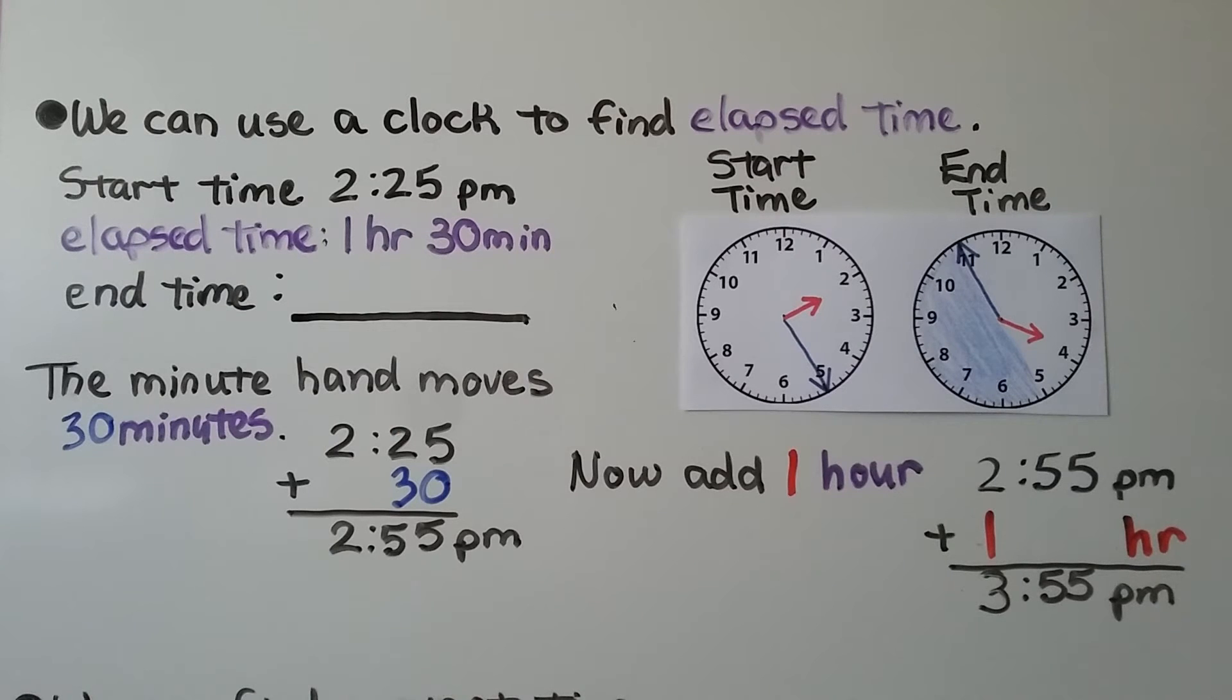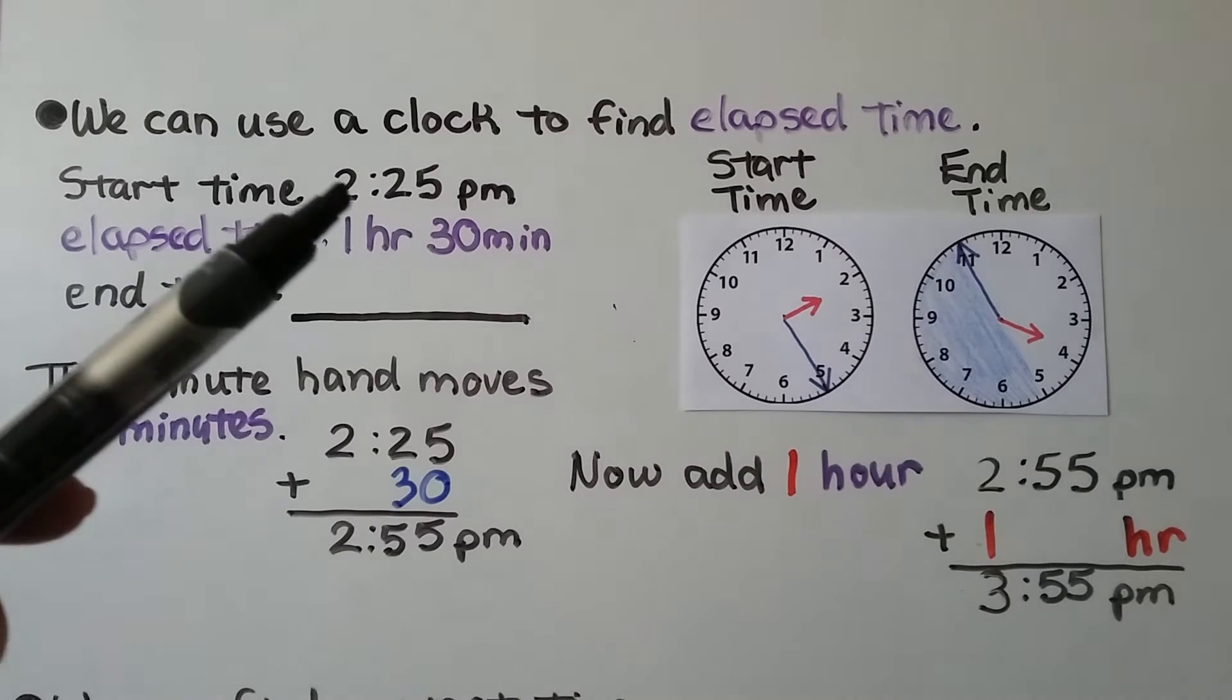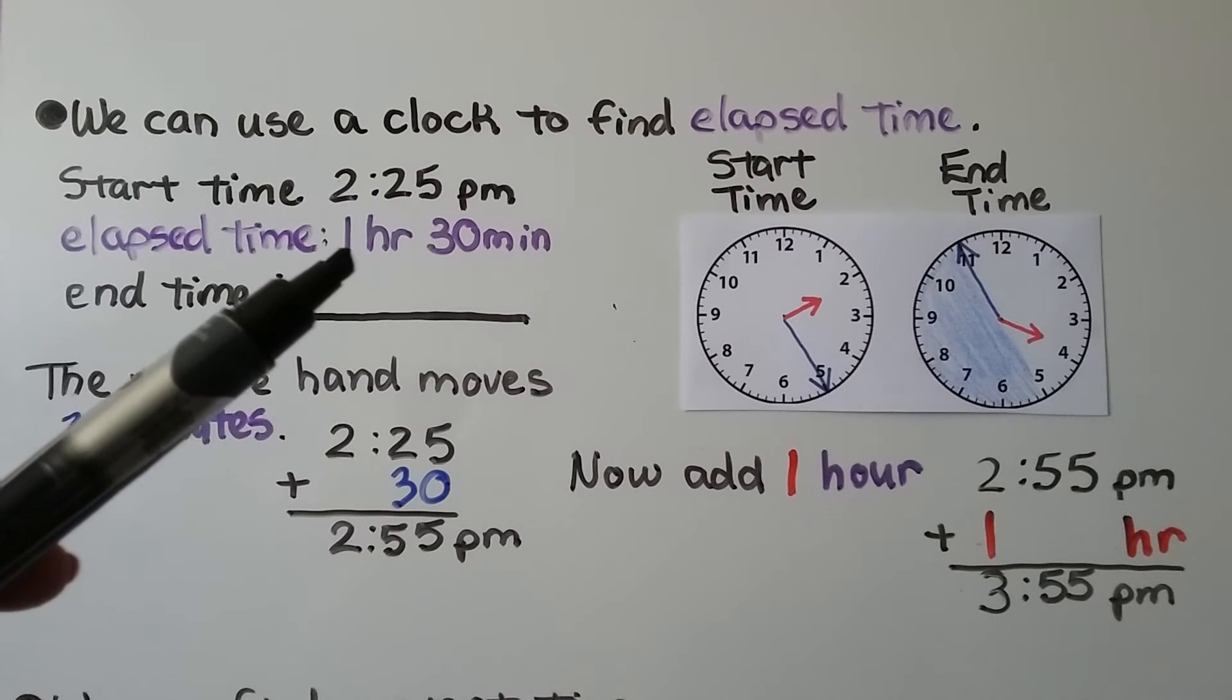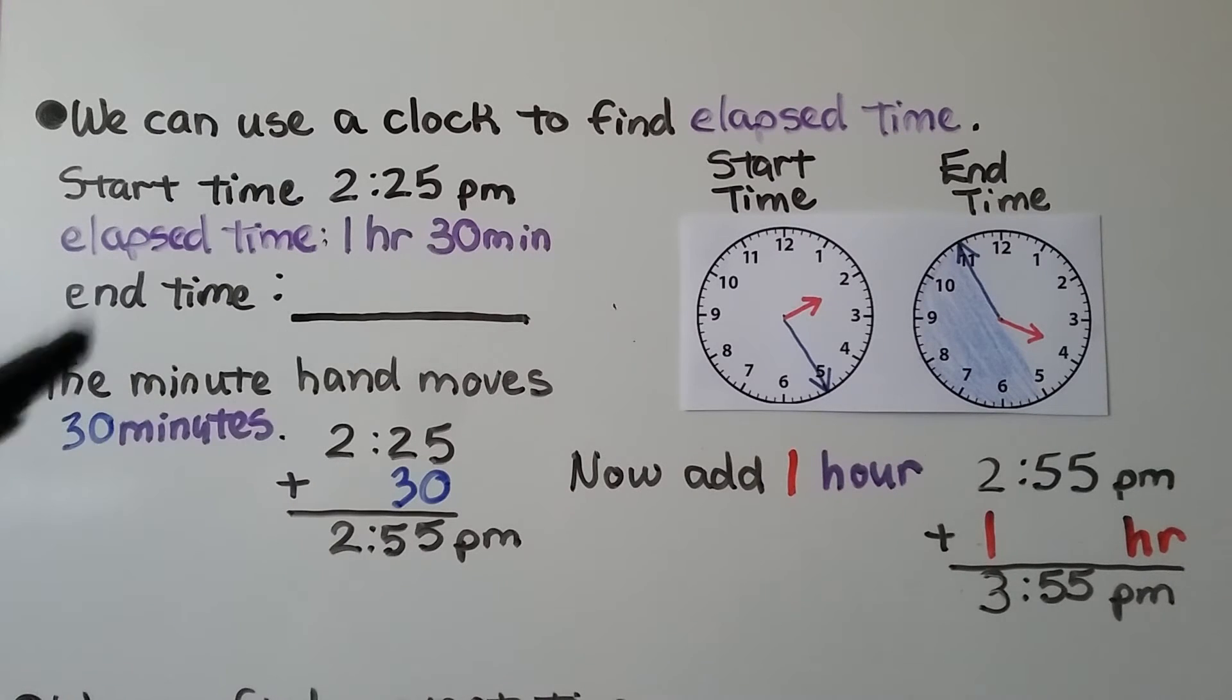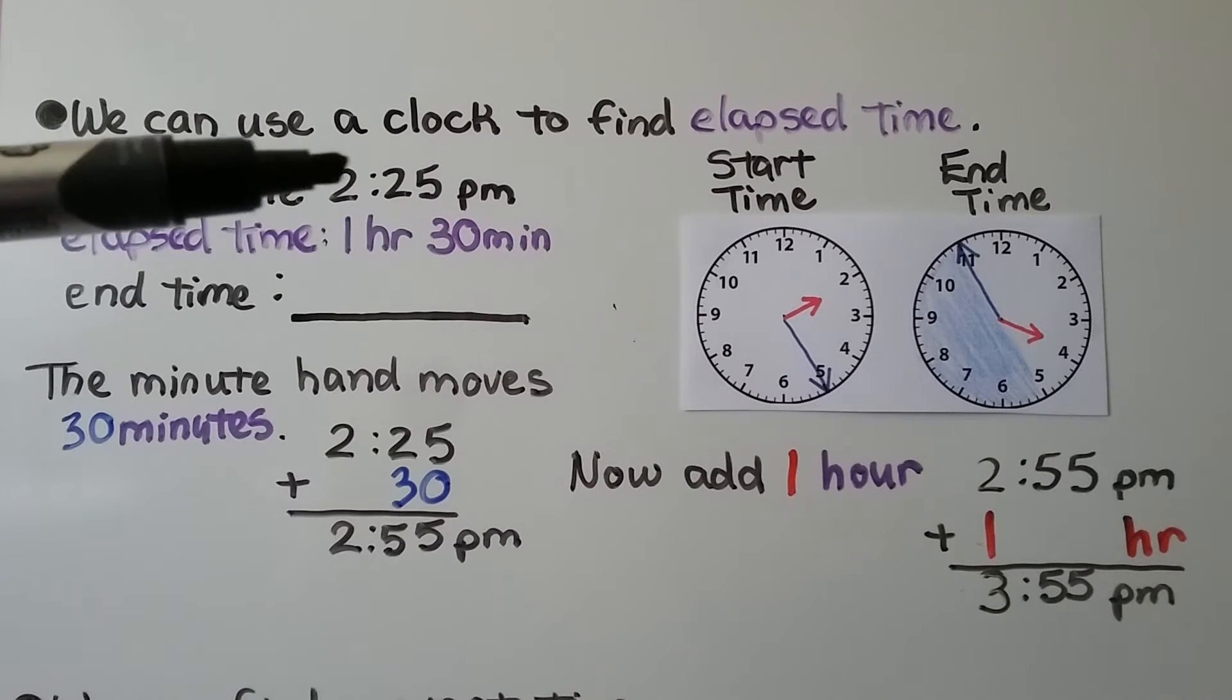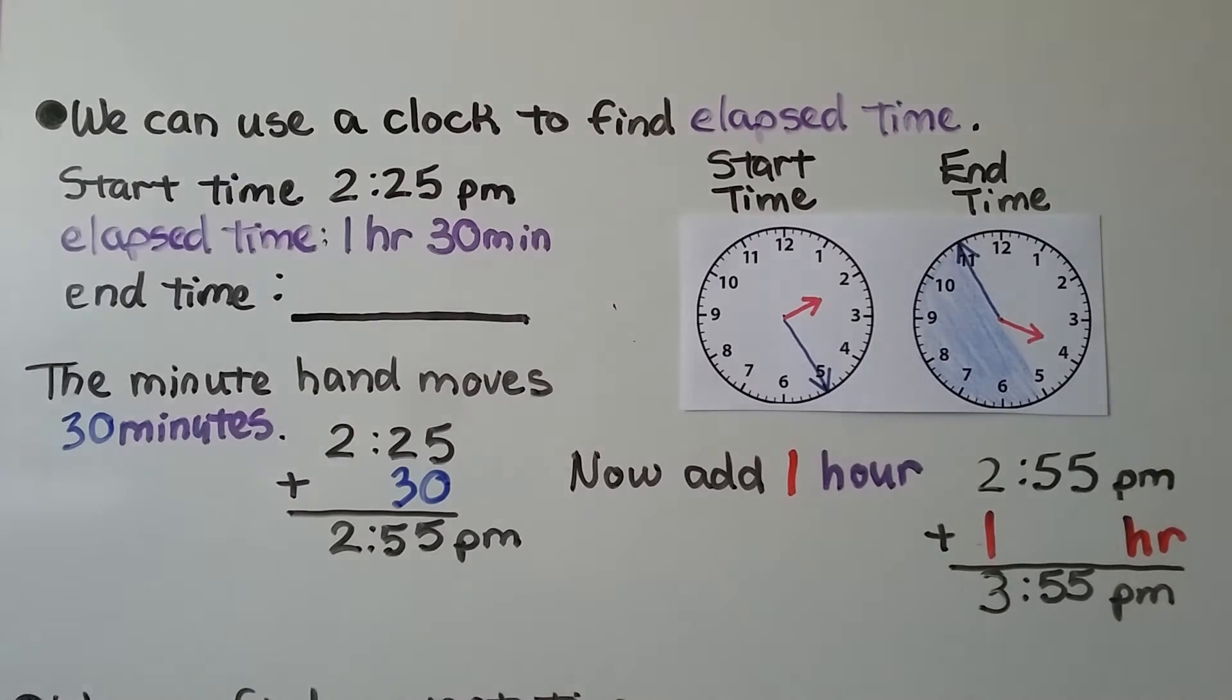We can use a clock, an analog clock, to find elapsed time. It's telling us that the start time is 2:25 PM. The elapsed time is 1 hour 30 minutes. So we need to add this time to the start time to get the end time.